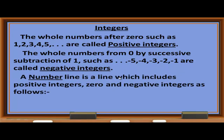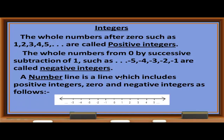A number line is a line which includes positive integers, 0, and negative integers. In general, whole numbers are numbers which are not fractions — without a fraction and without a decimal.